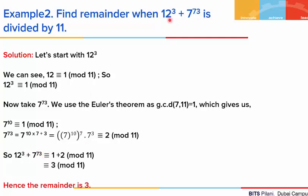Going back to our sum: 12 to the power 3 plus 7 to the power 73 is congruent to 1 plus 2, which gives us congruence to 3 mod 11. This is the smallest positive residue, and hence the remainder is 3.